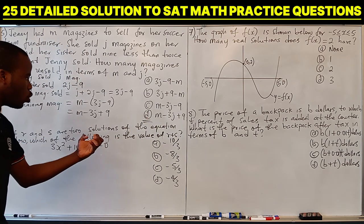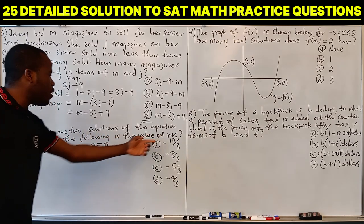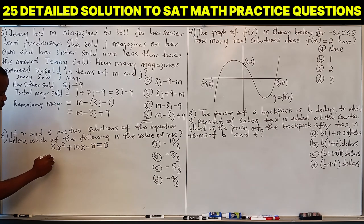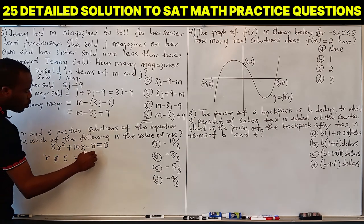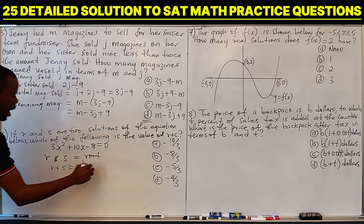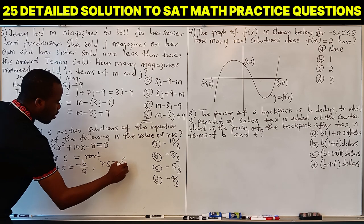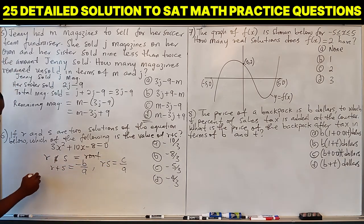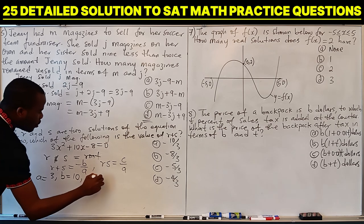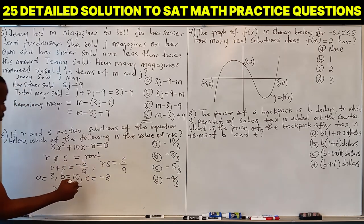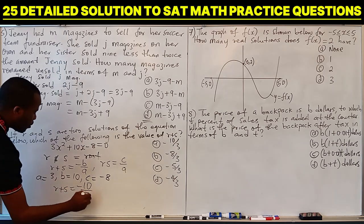Question 6: if R and S are two solutions of the quadratic equation, which of the following is the value of R plus S? We know that R plus S equals minus B over A, and RS equals C over A. In this equation A is 3, B is 10, and C is minus 8. So R plus S equals minus 10 over 3. The answer is A.